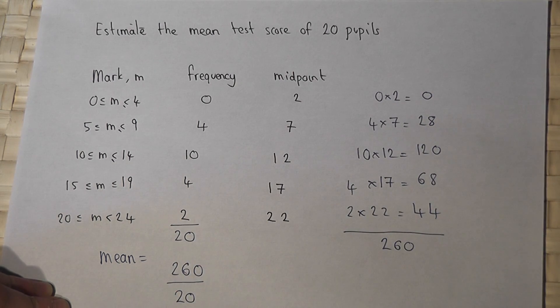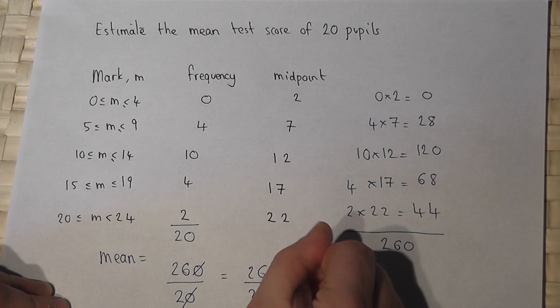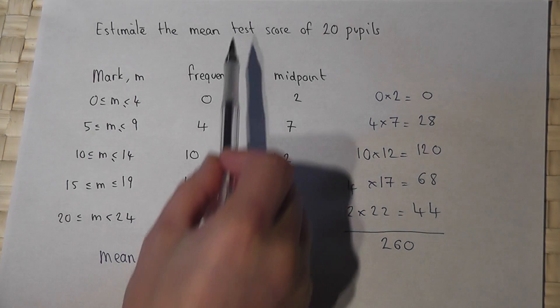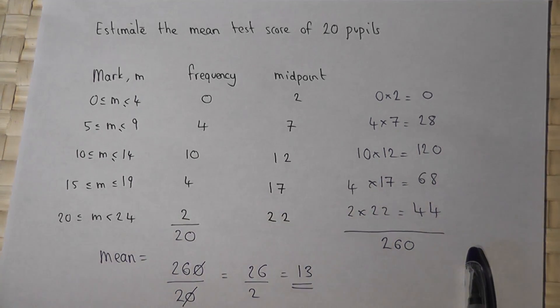So two sixty divided by twenty, which is twenty-six divided by two, which is thirteen. So thirteen is an estimate for the mean score on this particular test.